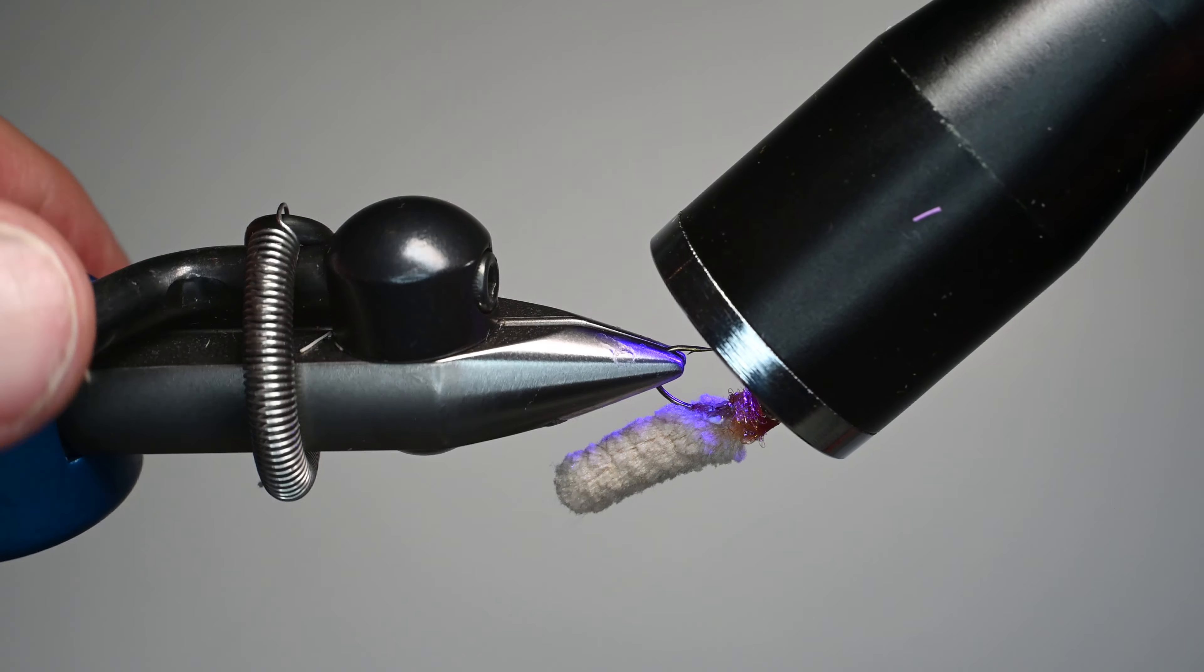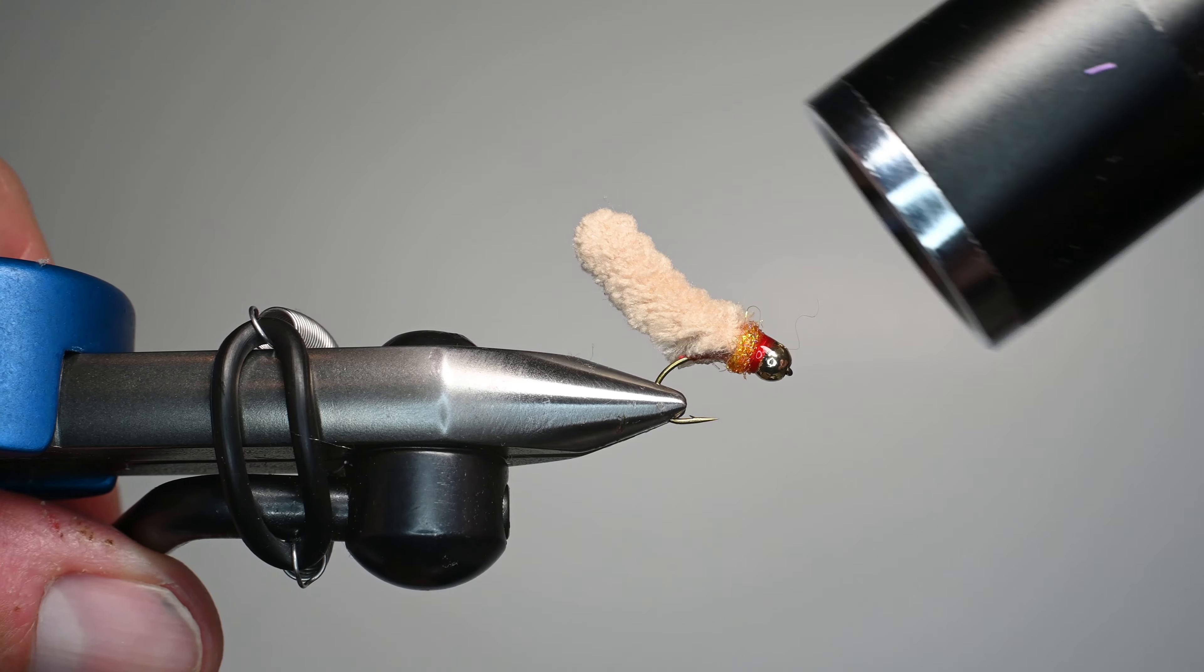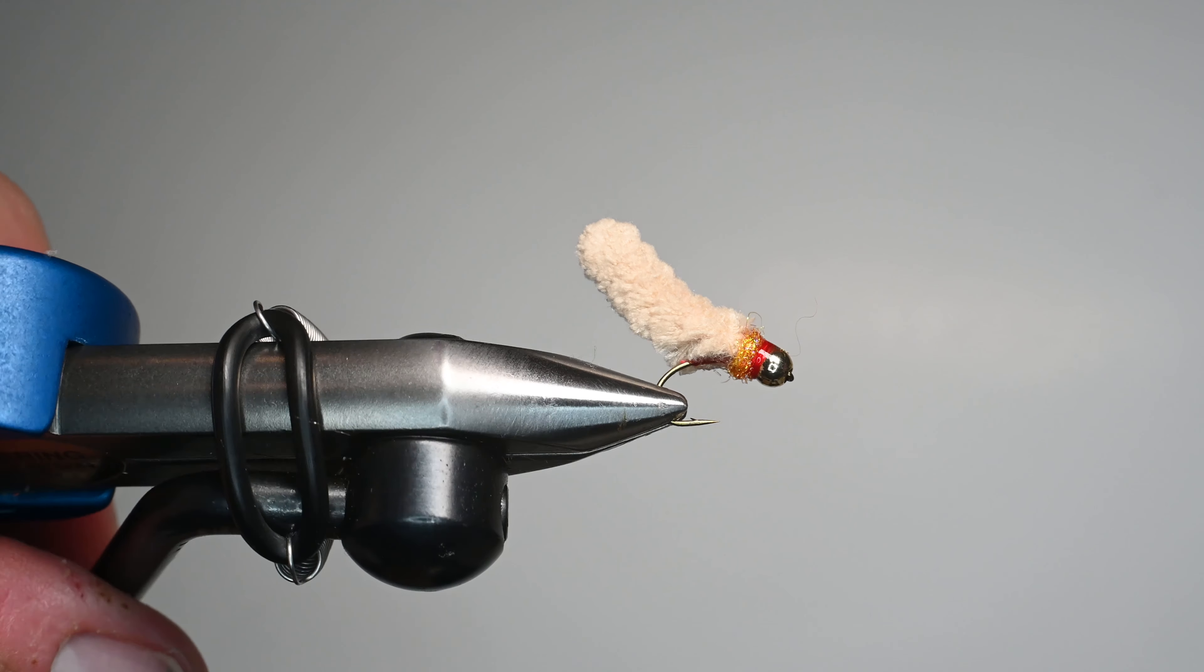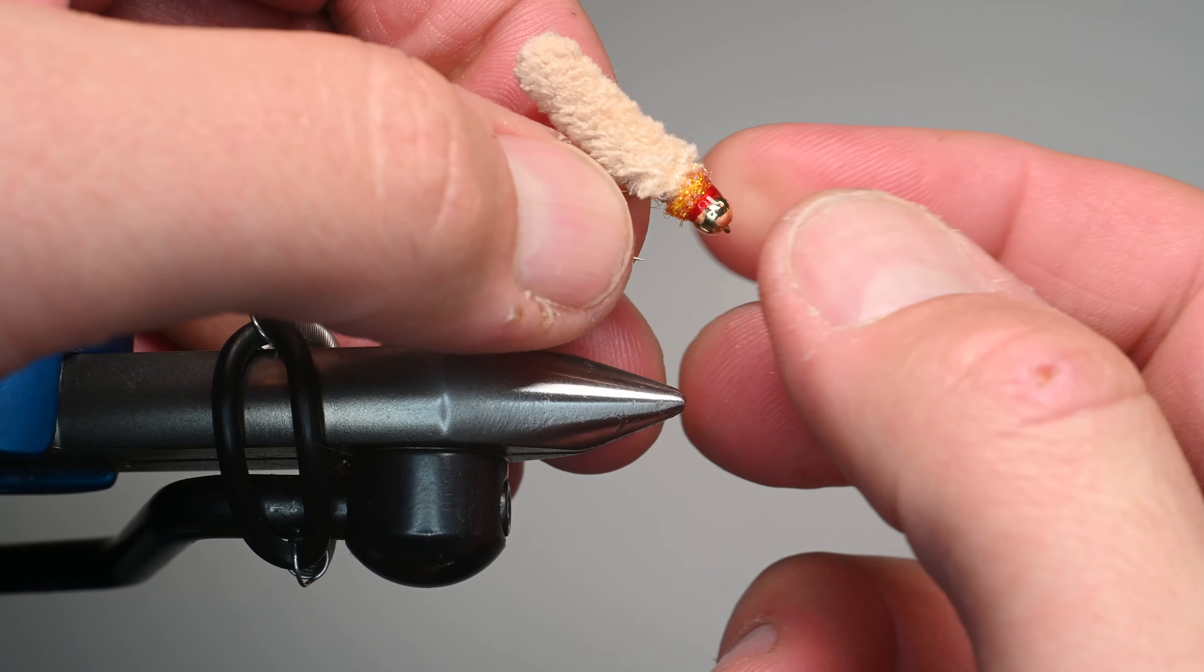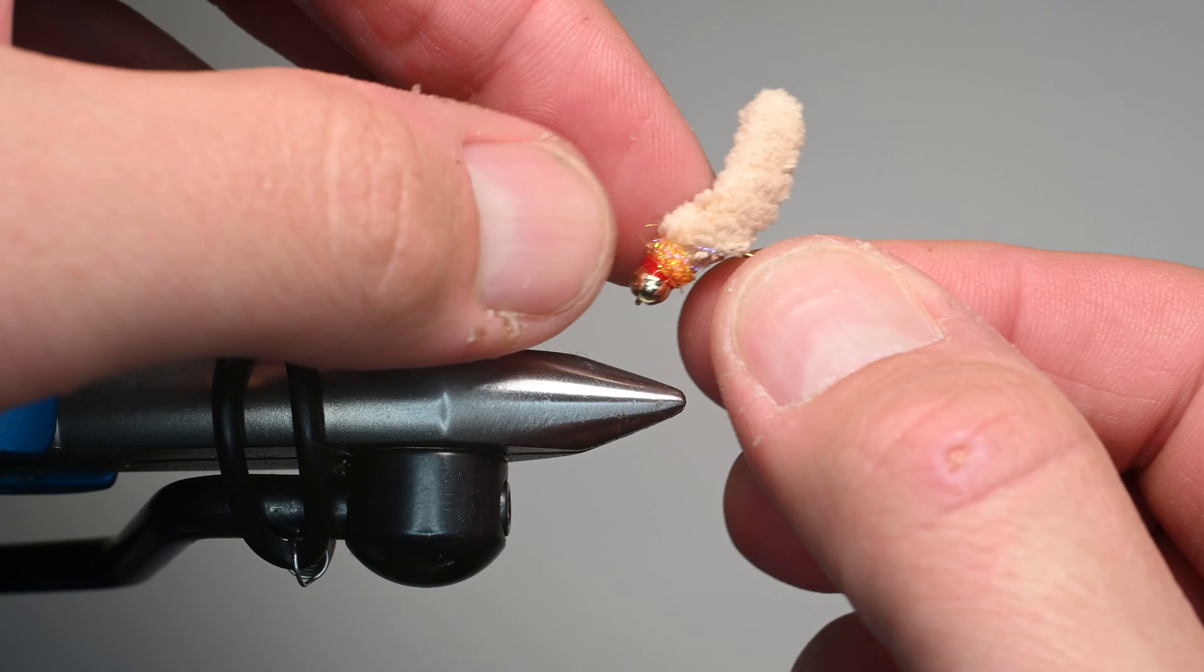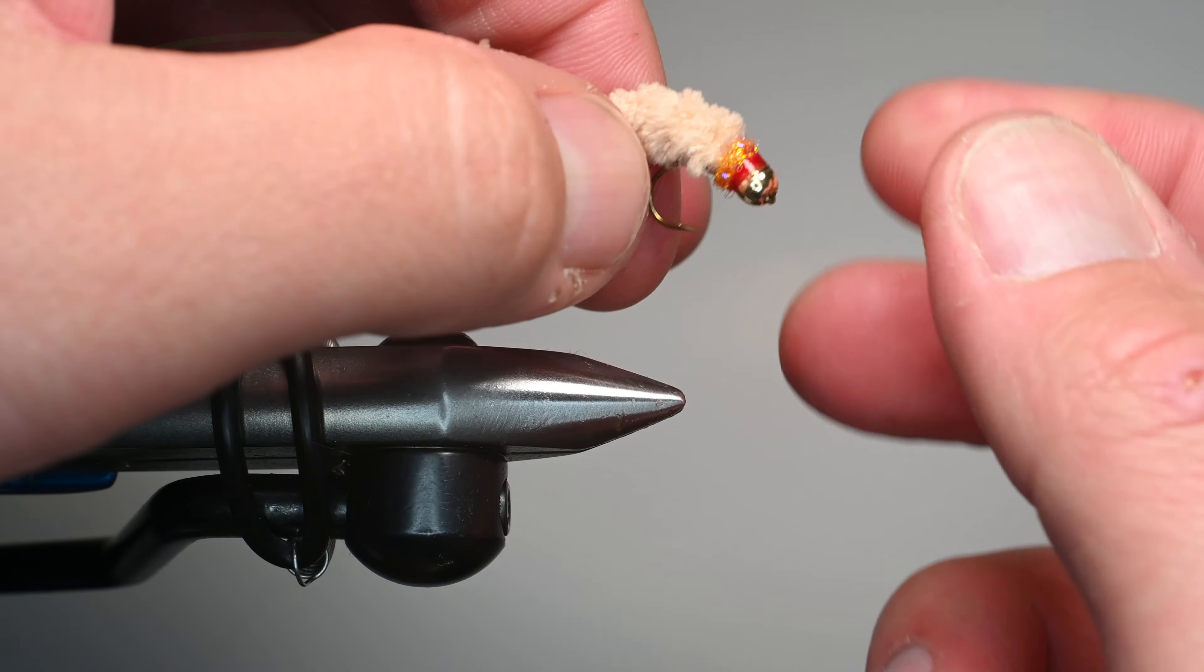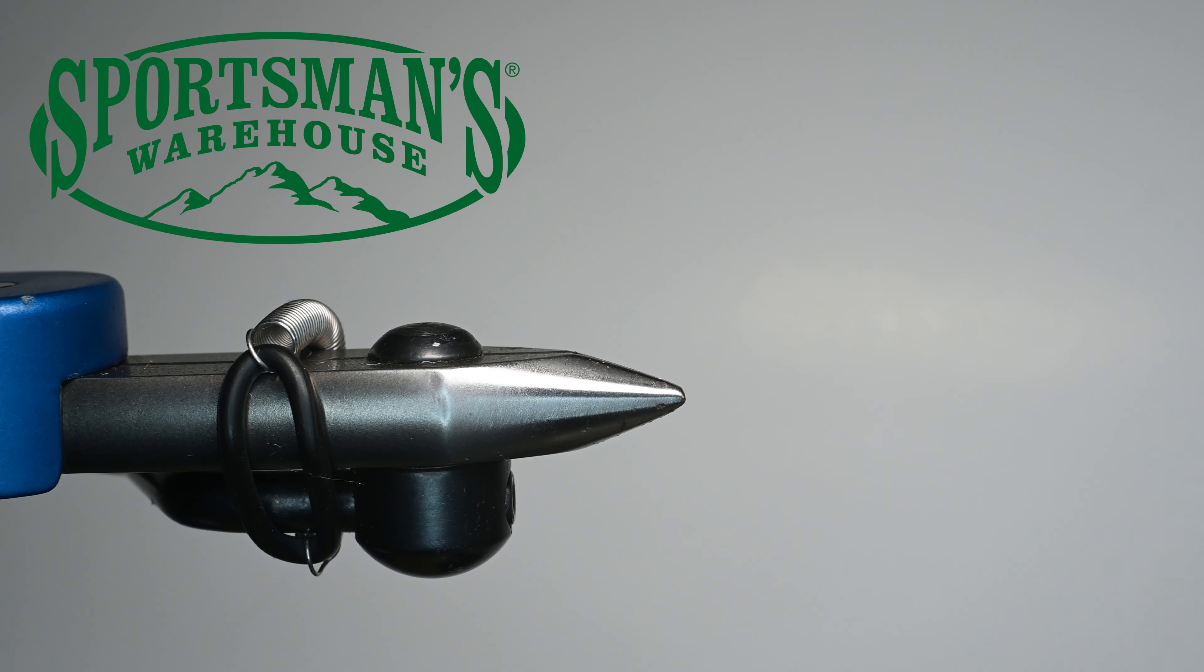You could tie it up on a jig hook and the chenille mop fly material comes in a bunch of different colors. Ice dub comes in a bunch of different colors. The only way you can test it is to tie some up and fish them yourself so thanks for watching and I hope you catch some fish with it.